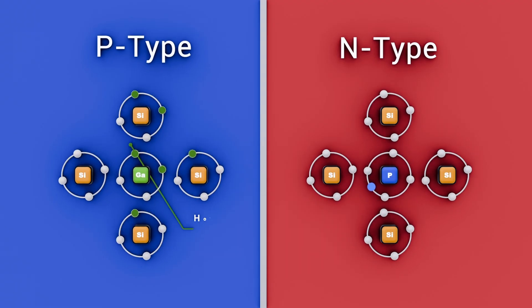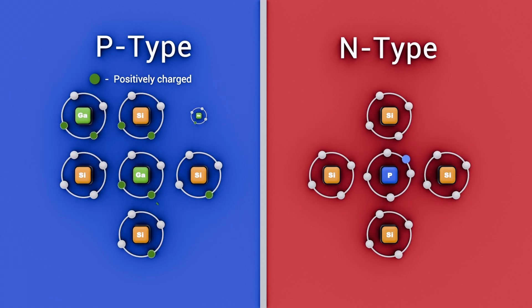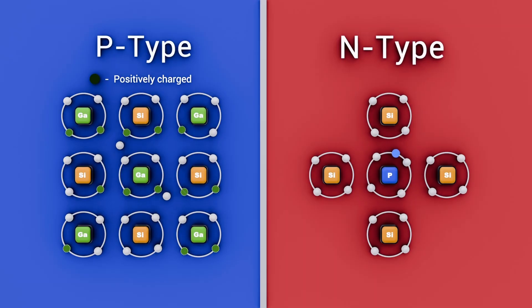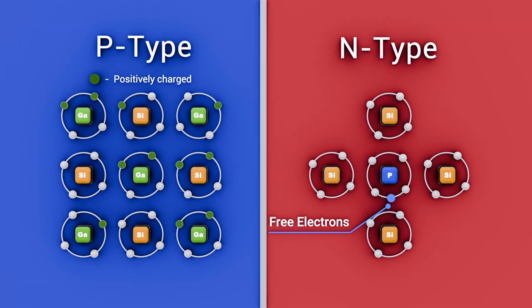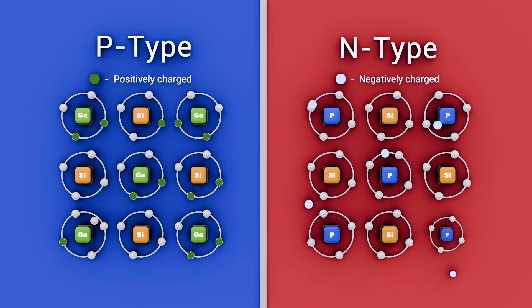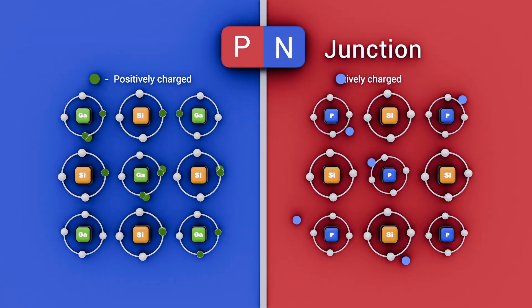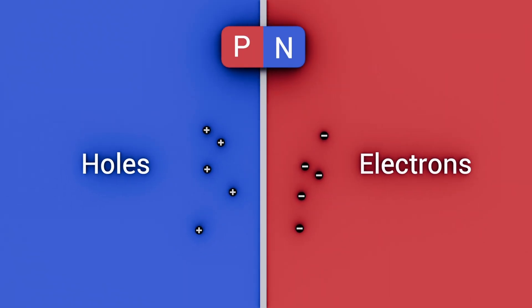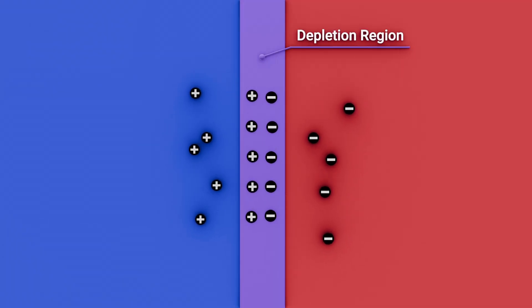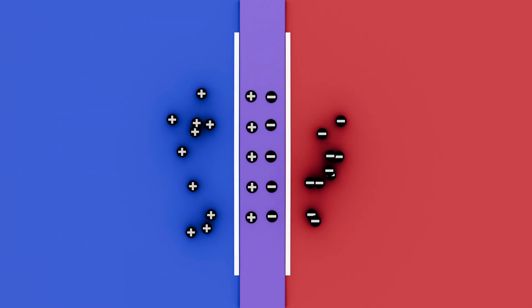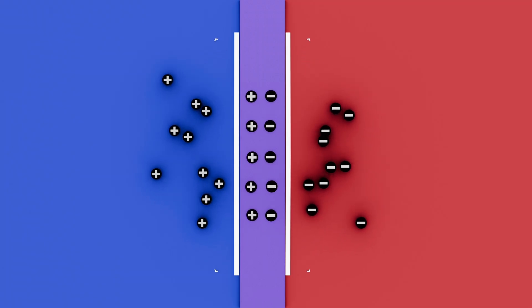The P-side contains holes, positive charge carriers, and is located on the anode side of the LED. The N-side contains free electrons, negative charge carriers, that are located on the cathode side of the LED. When the P-N junction is formed, electrons and holes recombine near the interface, creating a depletion region devoid of free charge. This region acts as a barrier preventing charge flow until the applied voltage overcomes it.